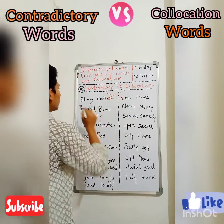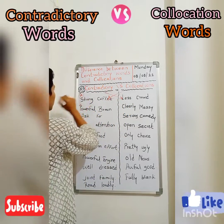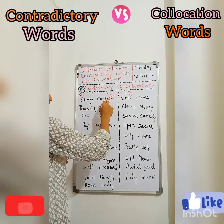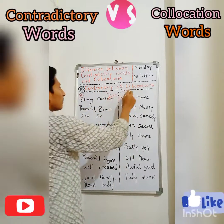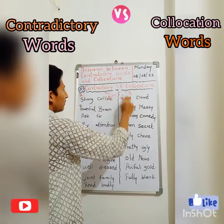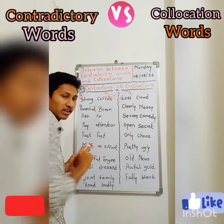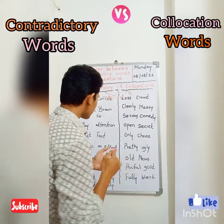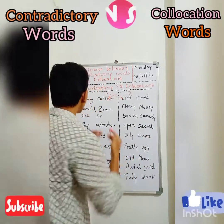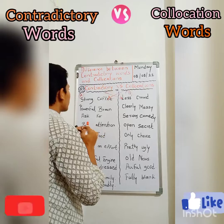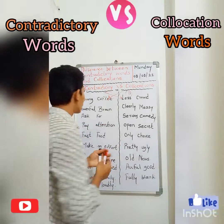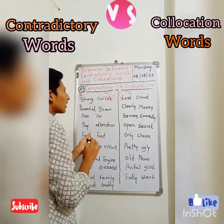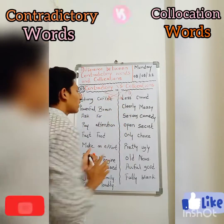Now let's look at the examples. Group A examples belong to collocations. Let's play — this is like a game. 'Strong coffee' — these are the collocations. And these are the contradictories. How are contradictories different from collocations? In contradictories, two opposite words are there. In collocations, two magical words — naturally framed words — are there.